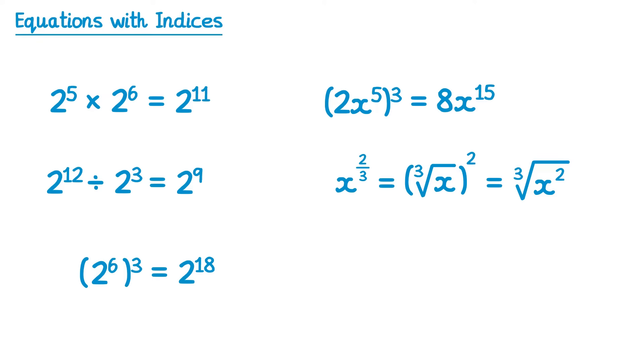And finally, what if we have a negative index, so x to the power negative 3? In this case we take the reciprocal, so we do 1 over x to the power positive 3.